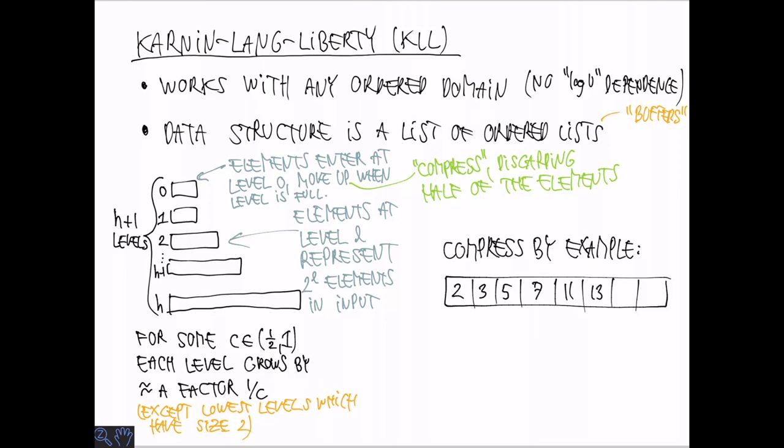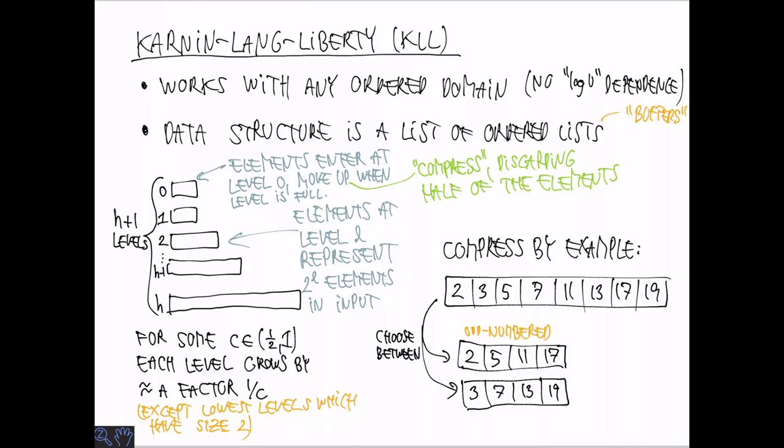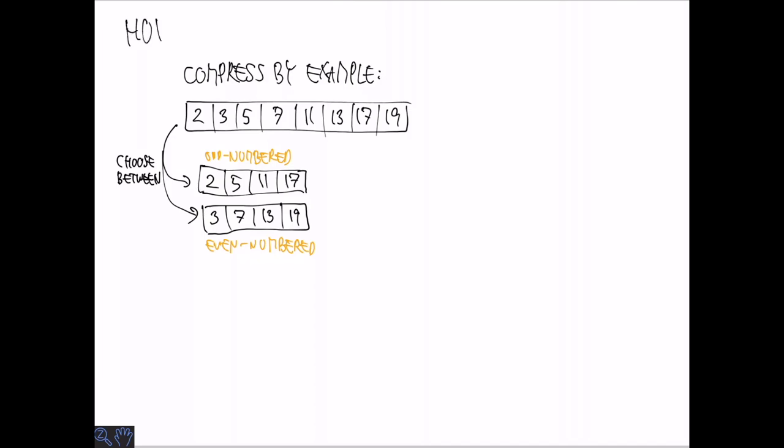So let's look at an example. Let's suppose we have a buffer at some level with, in this case, 8 elements. Now we are going to choose between two possible lists of elements to move up to the next level. So either we take all the odd-numbered elements from the list in sorted order, or we take the even-numbered elements from the list. So it's some kind of sample, but it's highly structured.